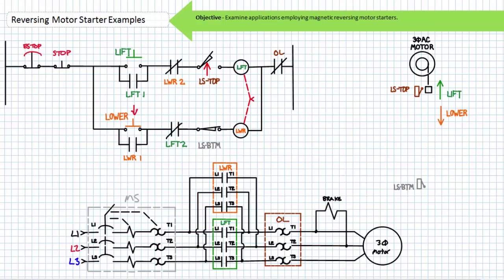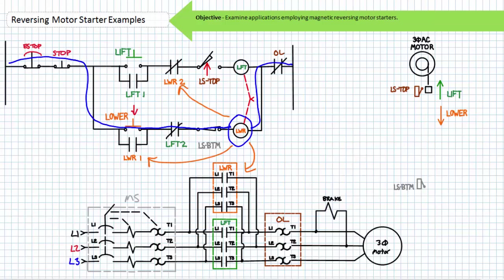An operator wishing to lower the fully opened door presses the momentary contact lower push button. Via the e-stop, the stop, the now closed lower push button, the lift 2 electrical interlock, the bottom limit switch, and the normally closed overload contact, the lowering contactor coil would be energized. When the coil of the lowering contactor is energized, its associated contacts change state: the lower 2 electrical interlock opens, the lower 1 holding contact closes, and the primary lower contacts close. The spring-set electrically released friction brake is disengaged. The applied phase sequence as provided by the lower contactor is L2, L1, L3, and the motor and chain drive lowers the door as intended.